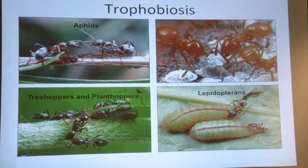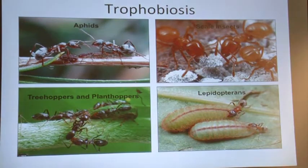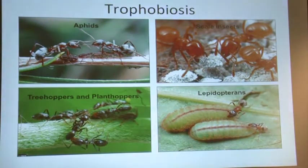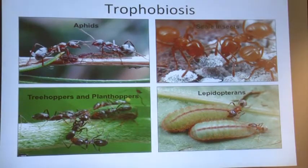Hemipterans are the main group of insects that ants associate with, but there are a couple of other examples across the insect tree of life. A really well-documented one: caterpillars of Lycaenid butterflies are very specialized on associating with ants. But for the most part it's Hemipterans. So — honeydew is the thing they're providing, and honeydew is something they don't want?